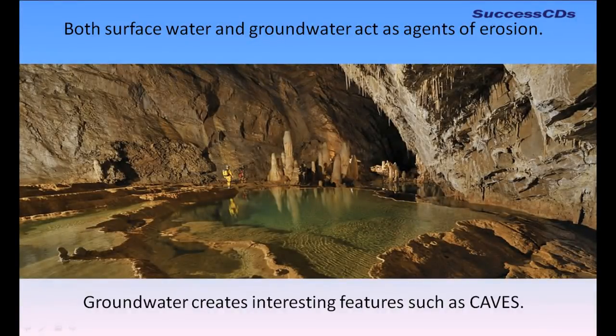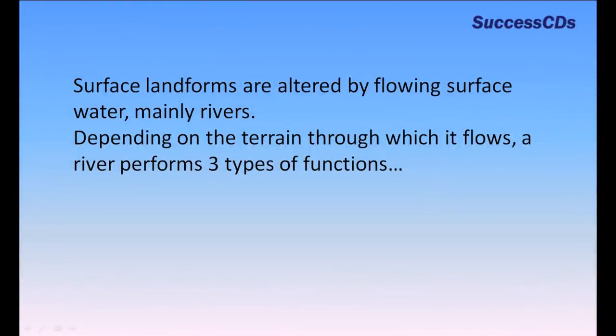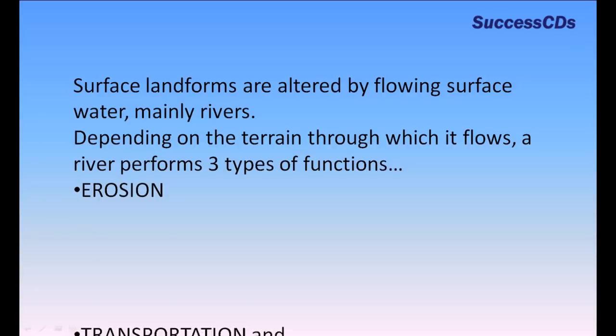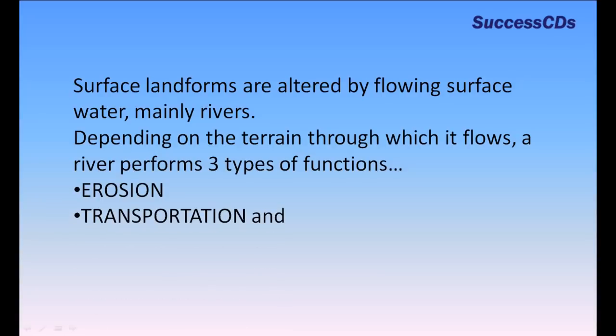Groundwater creates interesting features such as caves. Surface landforms are altered by flowing surface water, mainly rivers. Depending on the terrain through which it flows, a river performs three types of functions: erosion, transportation, and deposition.